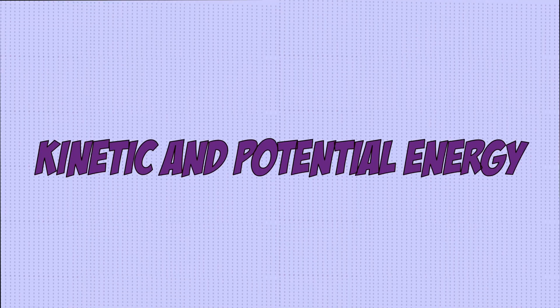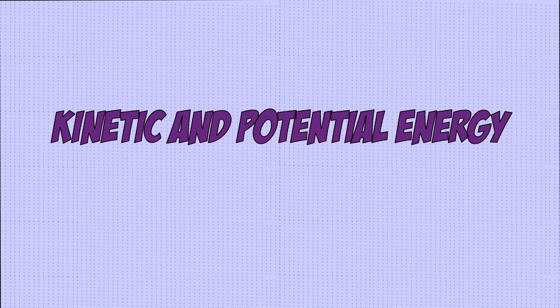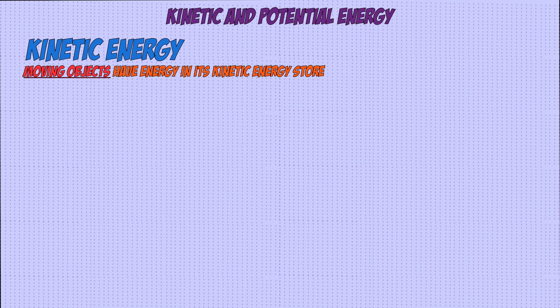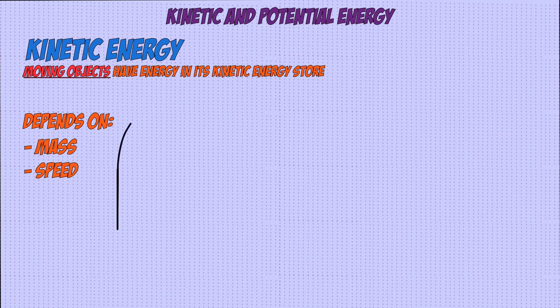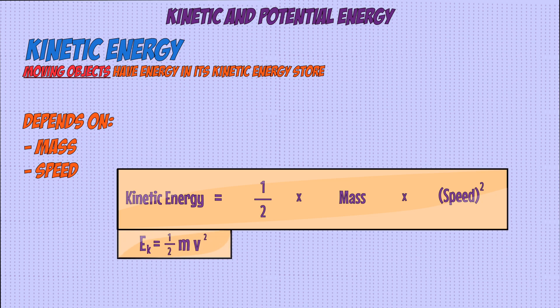Let's go through some of the equations you need to know for the energy topic. The first is for kinetic energy, which is the type of energy store that any moving object has. The amount of kinetic energy that an object has depends on its mass and speed. The greater its mass and the greater its speed, the more energy it has in its kinetic energy store. The equation for this is half times mass times speed squared, where kinetic energy is measured in joules, mass is measured in kilograms, and speed is measured in meters per second.